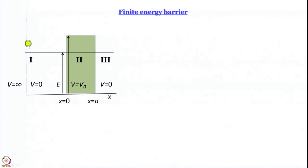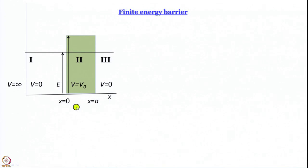To keep things simple, let the first potential barrier be infinite. Going to the left you have V equal to infinity, then region 1 where V equal to 0, analogous to the box we had earlier. The second barrier starts at x equal to 0 (which makes the mathematics easier), and the barrier has width a, so it ends at x equal to a.